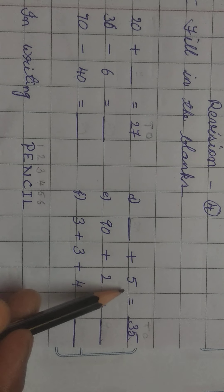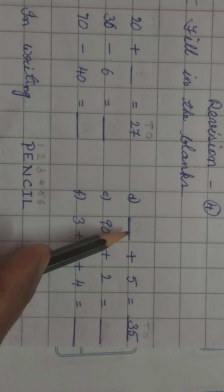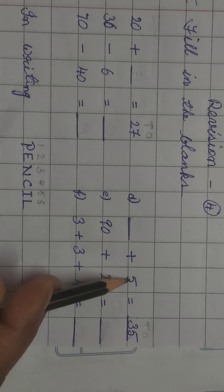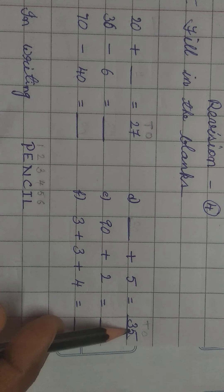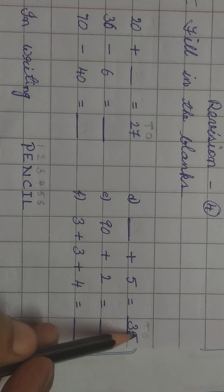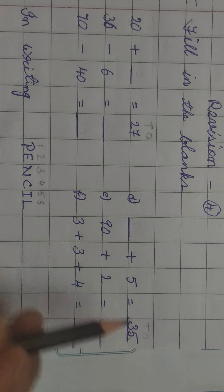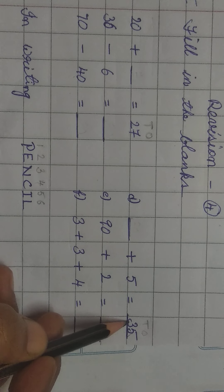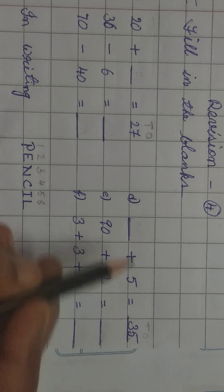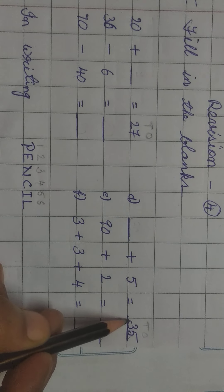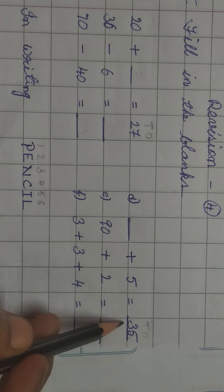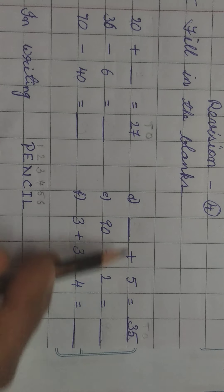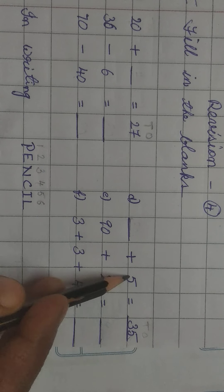dash plus 5 is equal to 35. Children, kis number ko 5 add karenge to 35 aata hai? So here also, in 35, ones place, tens place show karengi. 5 is in ones place, hai na? Tens place me kya number hai? 3. 3 tens means how much? 30, hai na? Jab bhi tens place dekhenge, to tens place ka number ke saath 0 add karengi. Kyunki 3 tens means 30, 5 ones means 5. Understand?